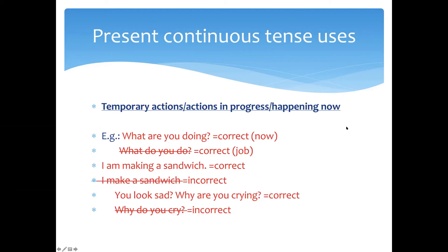So, when do we use the present continuous tense? Firstly, we use it for temporary actions — actions in progress that are happening now. It means the action is not completed yet. For example, the question 'What are you doing?' is answered: 'I am making a sandwich.' Here we use the present continuous tense.